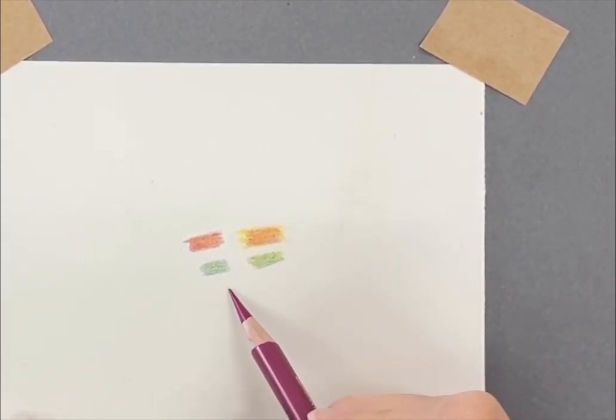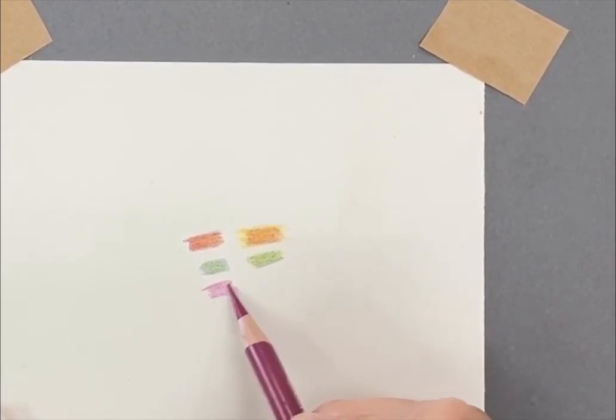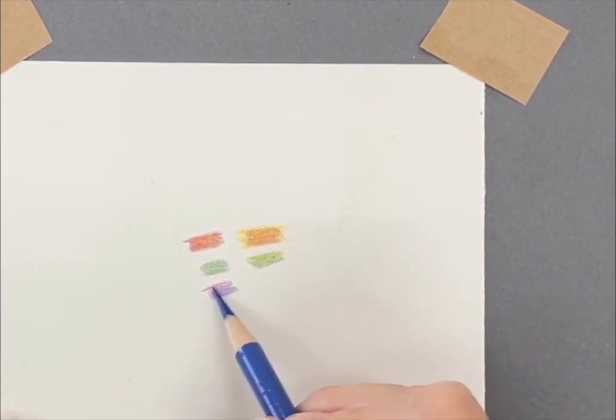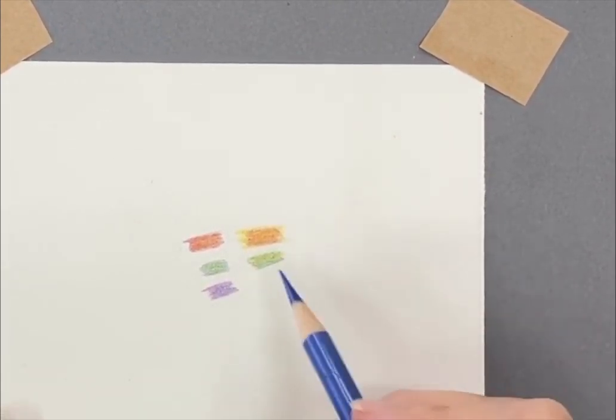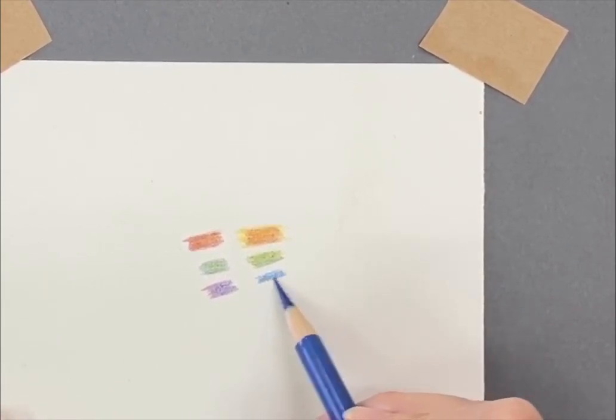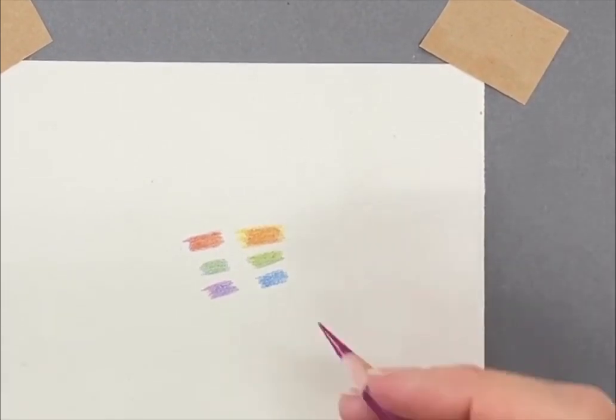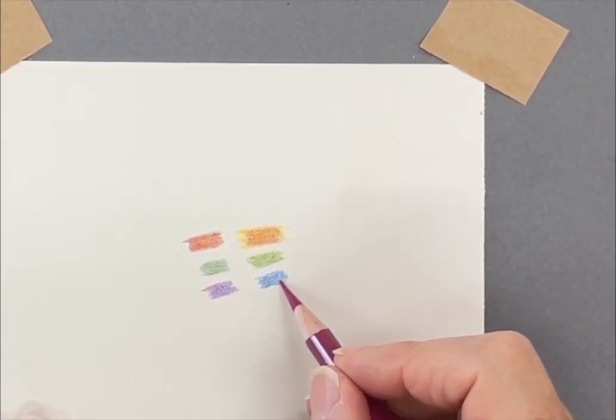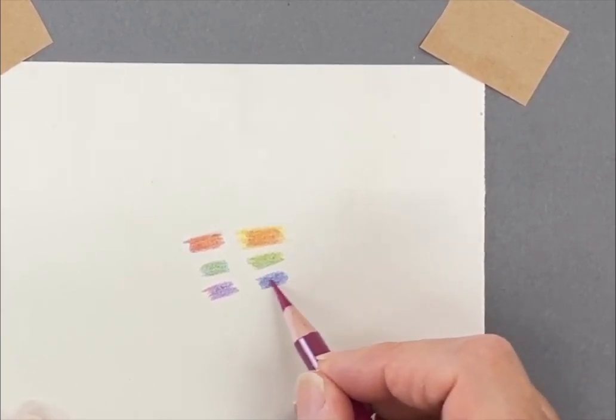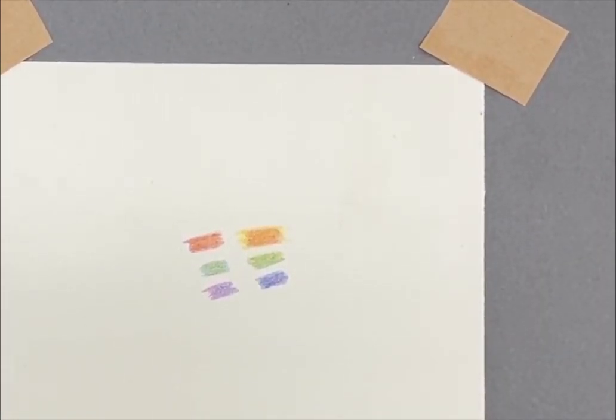And then the violet, you get a really nice violet. The violets are lacking a bit in the Polychromos set, so it's a great idea to mix your own. You can try this as an exercise, try quite a few and see how you go. There are three lovely secondary colors.